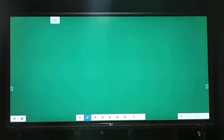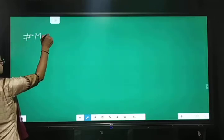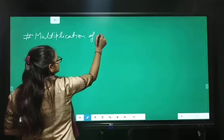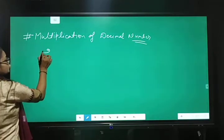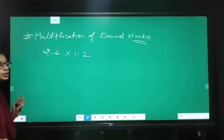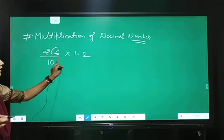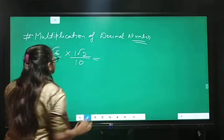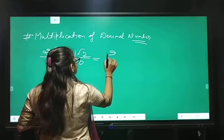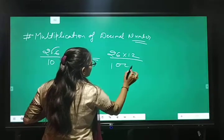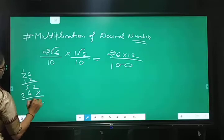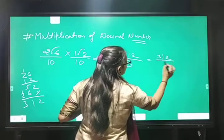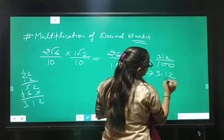Next topic is multiplication of decimal number. One example is 2.6 multiply 1.2. Point ko agar remove karengi to 10 because 1 digit ke baad point laga hua hai. 10. Numerator multiply by numerator and denominator multiply by denominator. So, we can write 26 multiply by 12 upon 100. 26 ko 12 se multiply karu. 6, 2 za and 2, 4 za and 5. 6, 2. 312 upon 100. 2 digit ke baad point lag jayega. 3.12.